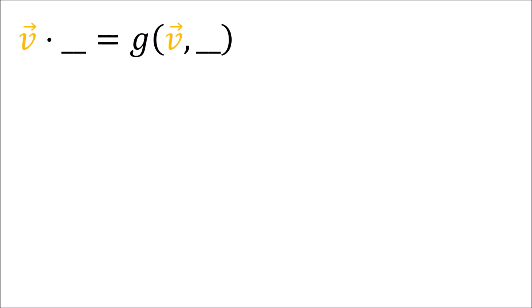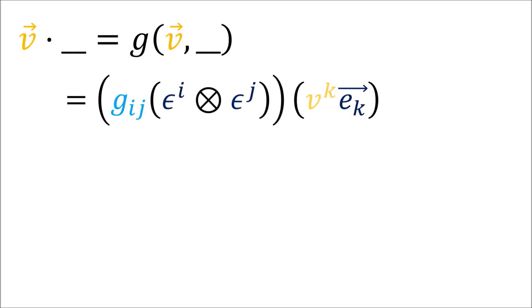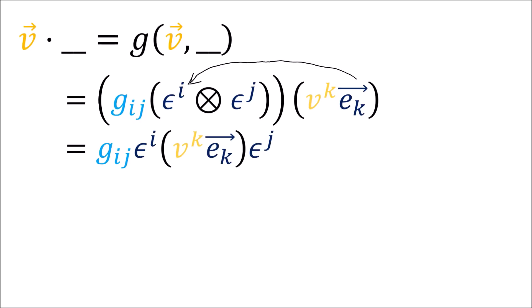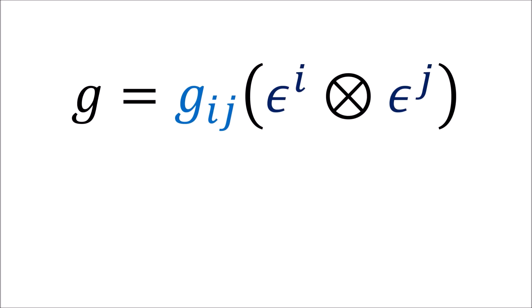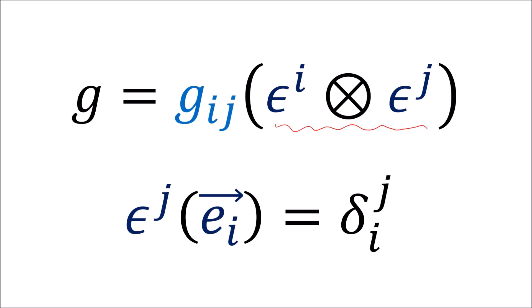If we want to compute the components of the covector v dot something, we give the metric tensor one vector input and leave the second slot empty. We expand out the metric tensor and vector v as linear combinations, pass the vector to the first covector, take the scalars out by linearity — which again becomes a Kronecker delta — and cancel the indexes. So the covector v dot something can be expanded as a linear combination of the basis covectors, the epsilons. This derivation relied on the metric tensor being a linear combination of covector tensor products and knowing how basis covectors act on basis vectors.